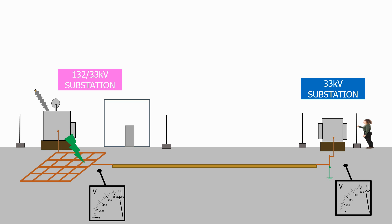How do we solve this problem? Well, the easiest way is not to connect the cable sheath at both ends. It is normal practice to only connect the cable sheath to the grounding grid at the source substation, and we will therefore not get any transferred potentials.